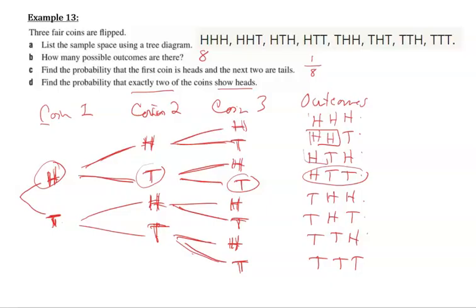So exactly two. There's 1, 2, 3. Is that 3? Because that's too many. 1, 2, 3. So that would be 3 out of the 8.